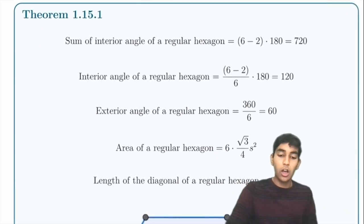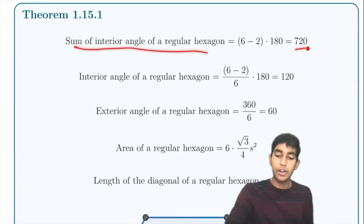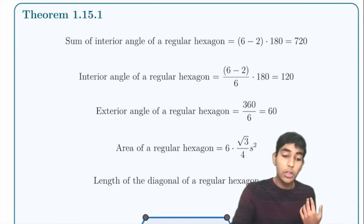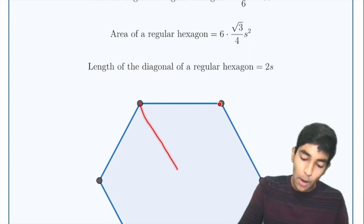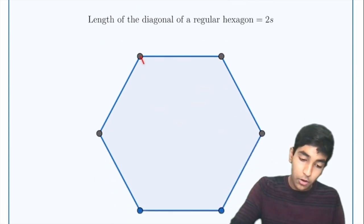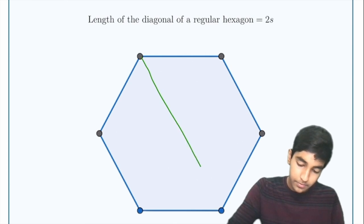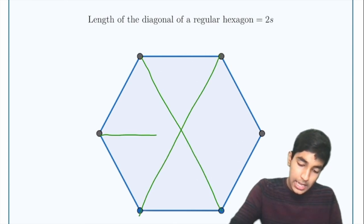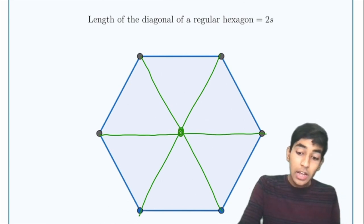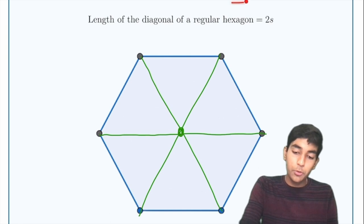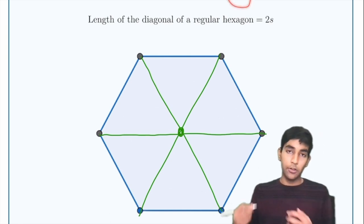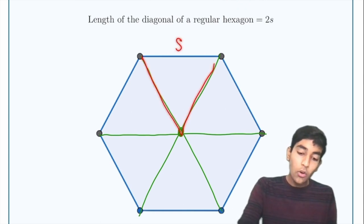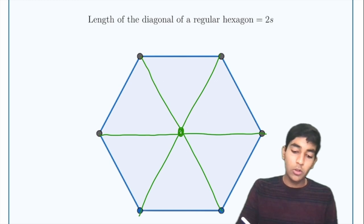Now hexagons. The sum of interior angles of a hexagon is 720 degrees. A regular hexagon can be divided into six equilateral triangles. The area of a regular hexagon is 6 × (√3/4) × s², which is just six times the equilateral triangle formula. The length of the diagonal of a regular hexagon is 2 times the side length.